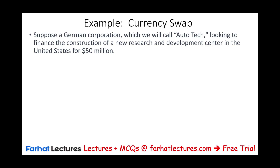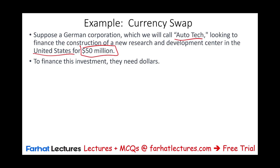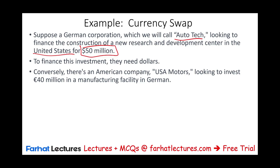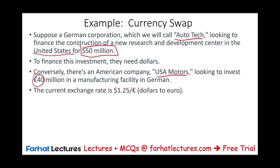Suppose a German corporation called Orotech is looking to finance the construction of a new R&D center in the US for $50 million — they need US dollars. On the other hand, a US company called USA Motors is looking to invest 40 million euros in a manufacturing facility in Germany. The current exchange rate is 1.25, meaning 40 million euros equals 50 million dollars.